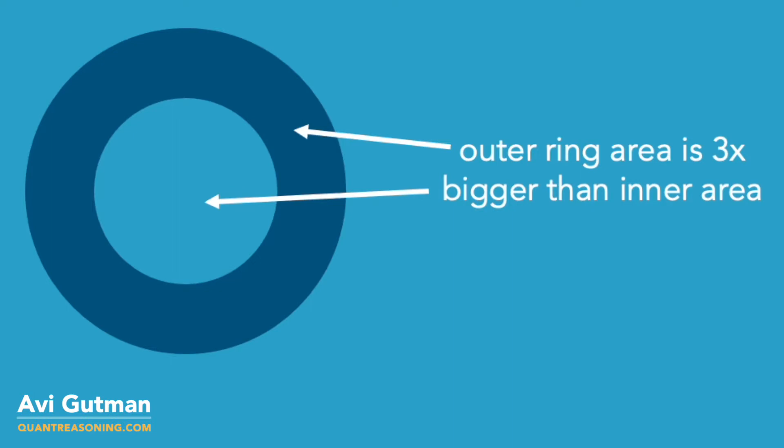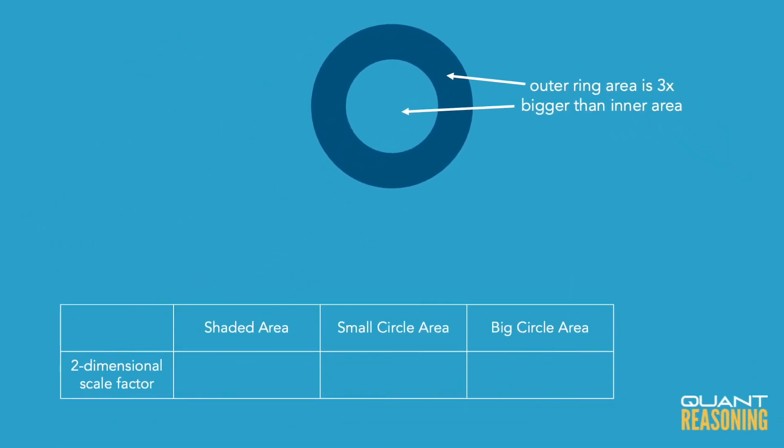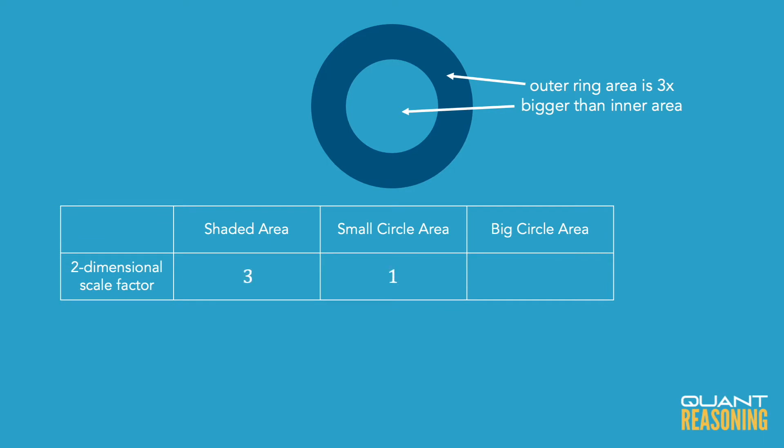But the thing is that the shaded area is not a shape that I know how to work with. I mean, it's just a ring. But if I add the shaded area to the inner circle, that's a circle. If we add the two together,